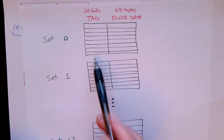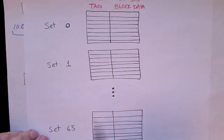Each set has eight lines: one, two, three, four, five, six, seven, eight. So we have 64 sets, eight lines each.